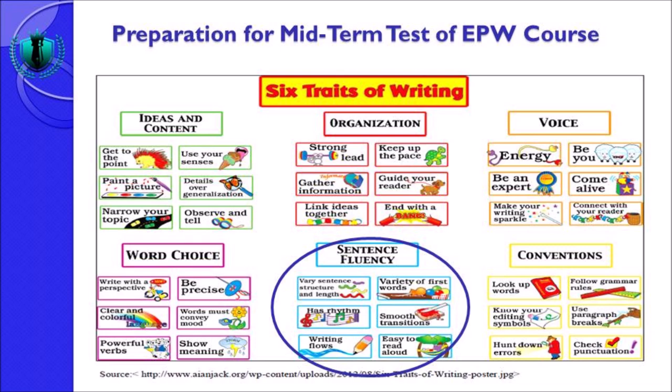Sentence fluency is the fifth trait of writing, dan ada 6 unsur. Yang pertama adalah various sentence structure and length — anda harus memvariasikan struktur kalimat dan panjang kalimat. Kalau kalimat pertama simple sentence, kalimat kedua variasikan, kemudian keempat kelima bisa kembali lagi simple sentence. Yang kedua, variety of first words — variasikan penggunaan kosa kata pertama yang digunakan di dalam kalimat.